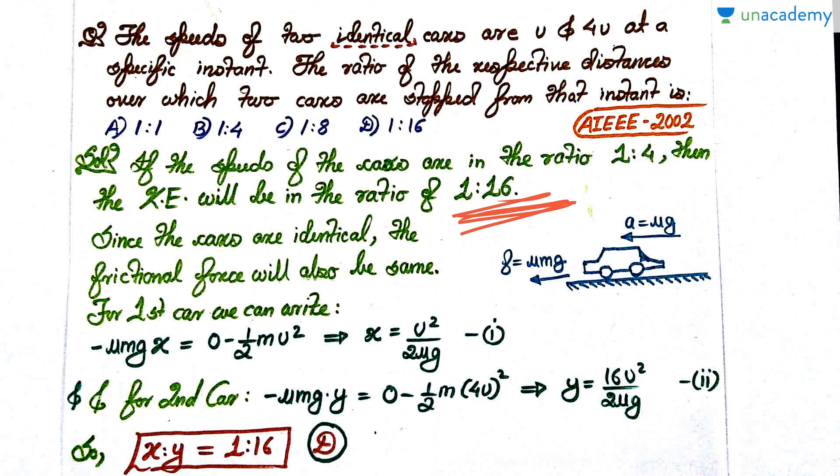Since it is directly proportional to the square of velocities and the velocities are in this ratio, kinetic energy ratio will get squared. It will become 1 is to 16. Since the cars are identical, the frictional force will also be same.